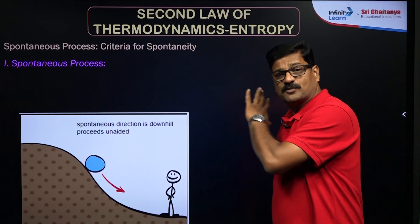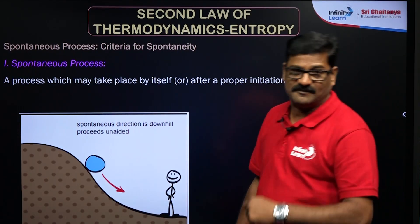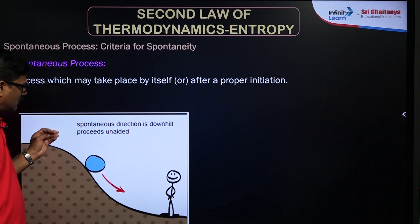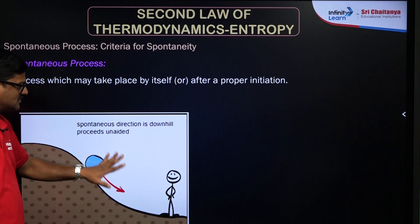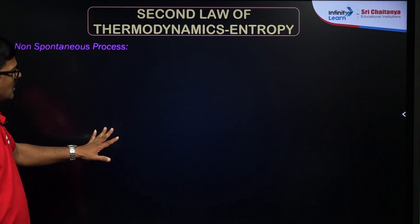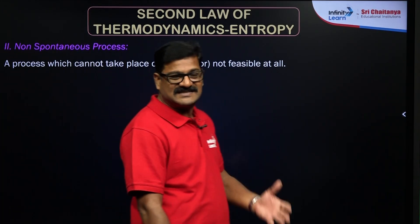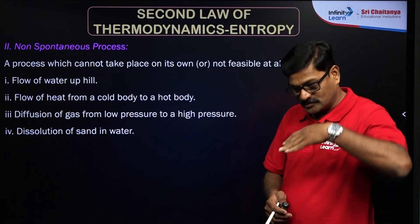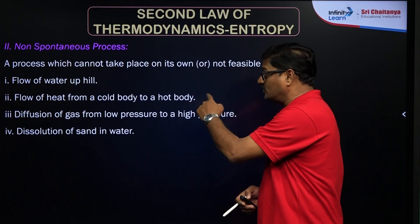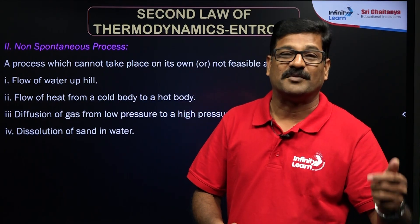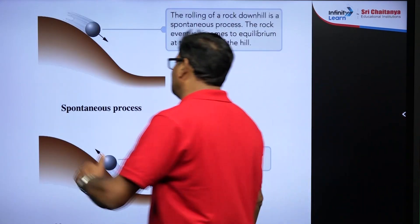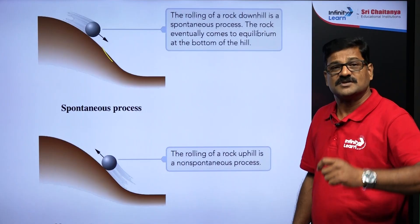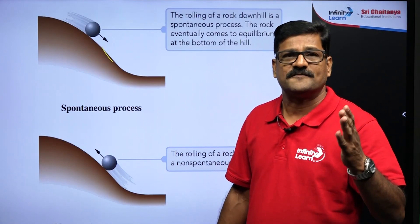A spontaneous process is a process that takes place by itself. For example, a stone rolling down a hill — you need not do any work on it; it happens by itself. A non-spontaneous process does not take place by itself; it requires external work. The flow of water up a hill is non-spontaneous, flow of heat from a colder to a hotter body is non-spontaneous, whereas rolling down is spontaneous and climbing up is non-spontaneous.